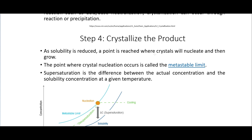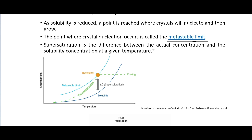Step four is to crystallize the product. Steps three and four are kind of the same thing. As solubility is reduced, a point is reached where crystals will nucleate and then grow. The point where crystal nucleation occurs is called the metastable limit. Supersaturation is the difference between the actual concentration and the solubility concentration. Between the solubility line and the metastable limit line is the supersaturation zone — you're beyond the concentration needed to be insoluble, but it remains soluble until it reaches that metastable limit.